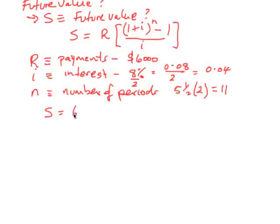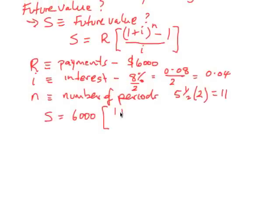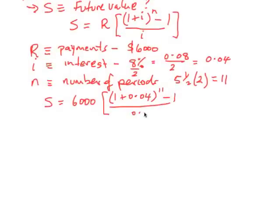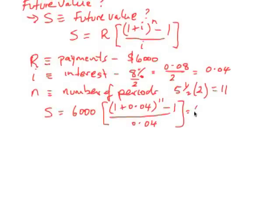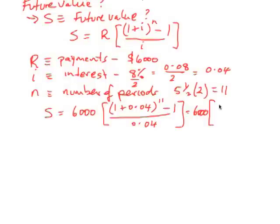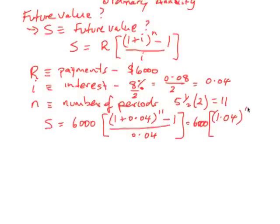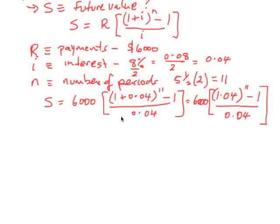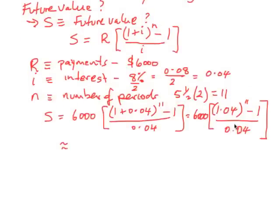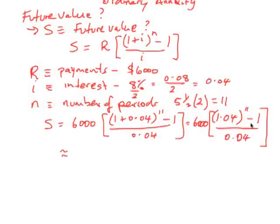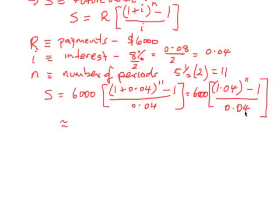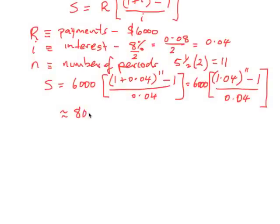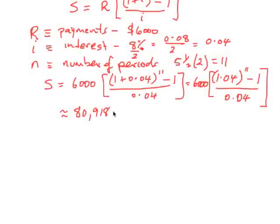So our future value S is going to be given by 6,000 times [(1.04)^11 - 1]/0.04. Now we use our calculator on this. The best way to use your calculator is this: find 1.04 to the power of 11, subtract 1, divide the result by 0.04, and then multiply by 6,000. Now when you do that, you'll get approximately $80,918.11.